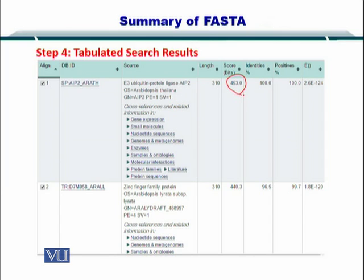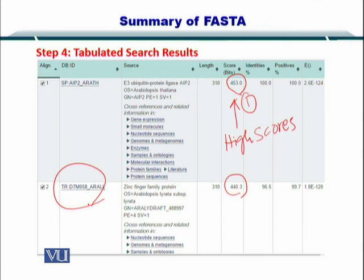The scores are very important — the higher the score, the better. Essentially, we want higher scores. This protein is ranked number one because it had a higher score compared to others. The next would be rank number two, and there will be many other proteins ranked similarly in the search.